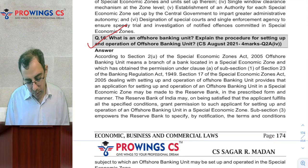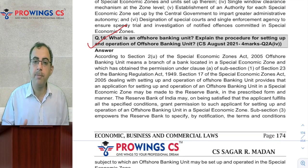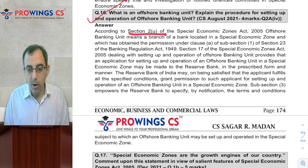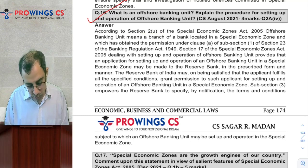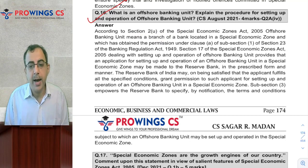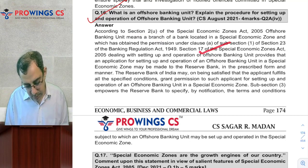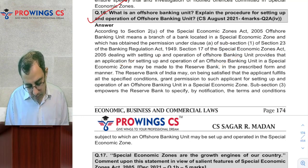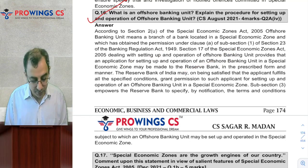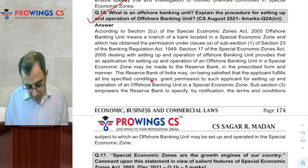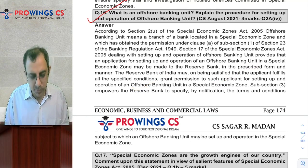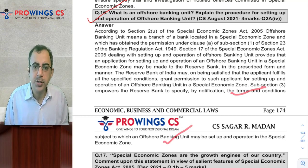Do read about what an offshore banking unit is and the procedure for setting it up. According to Section 2(u) of the Special Economic Zone Act, an offshore banking unit is a kind of branch of a bank located in the special economic zone, covered by the Banking Regulation Act. Section 17(1) says that for setting up and operation of the offshore banking unit, an application will have to be made for the OBU license in a SEZ to the Reserve Bank. The Reserve Bank, on being satisfied that the applicant fulfills the requirements, will grant the license to set up the offshore banking unit. RBI should be satisfied and will give suitable notification imposing terms and conditions, subject to which they can set up this kind of unit.